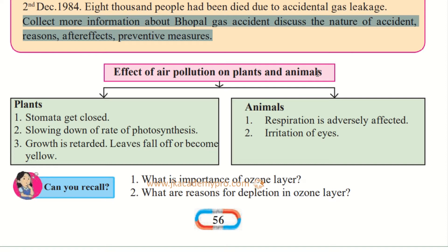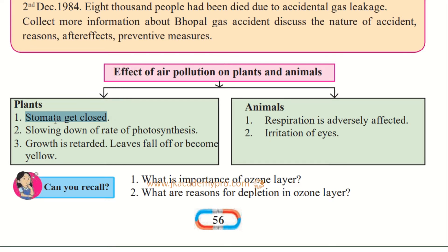Now let's read about the effect of air pollution on plants and animals. Not only human beings but all of nature is affected. For plants: the stomata — the small openings in leaves used for gas exchange — get closed because the leaves cannot take in pollutants. This slows down the rate of photosynthesis. Growth is also retarded since plants cannot produce food properly, and leaves fall off or turn yellow.